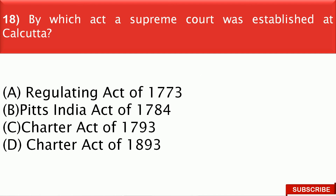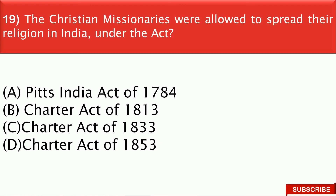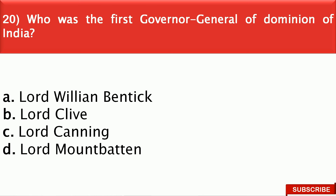Next question: By which act was a Supreme Court established at Calcutta? The right answer is option A — that is the Regulating Act of 1773. The Christian missionaries were allowed to spread religion in India under the act — the right answer is option B, that is the Charter Act of 1813. Next question: Who was the first Governor General of the Dominion of India? The right answer is option D — that is Lord Mountbatten.